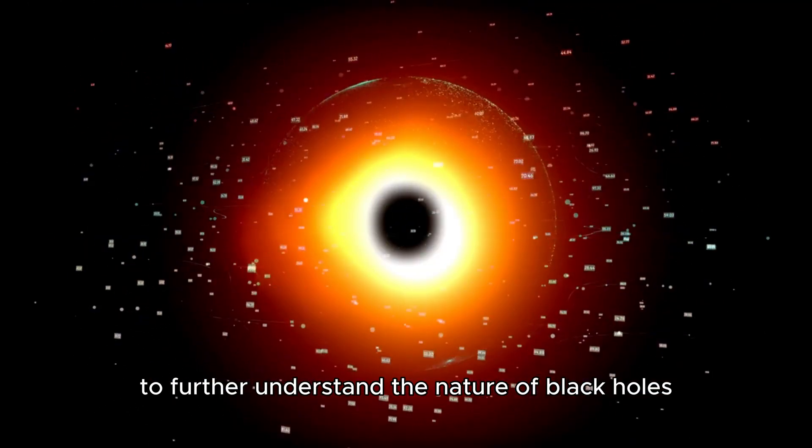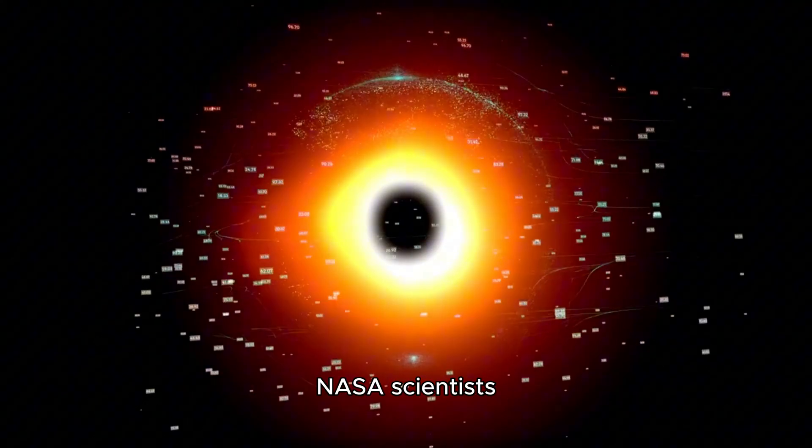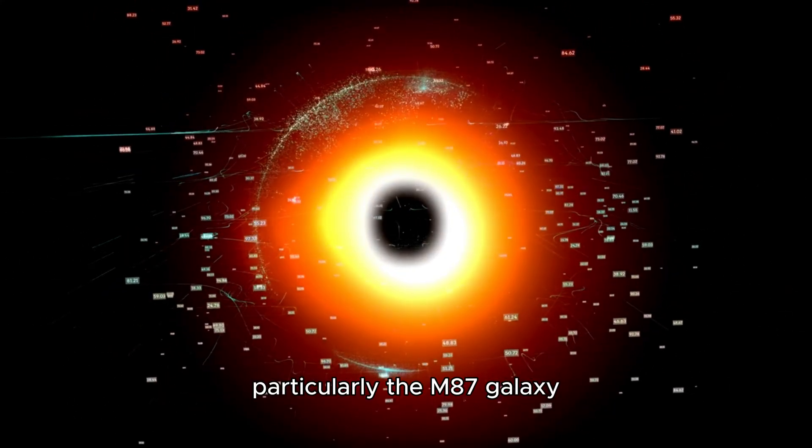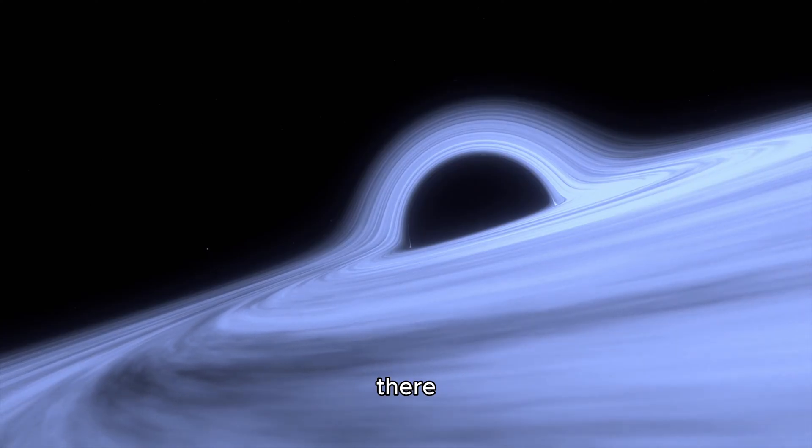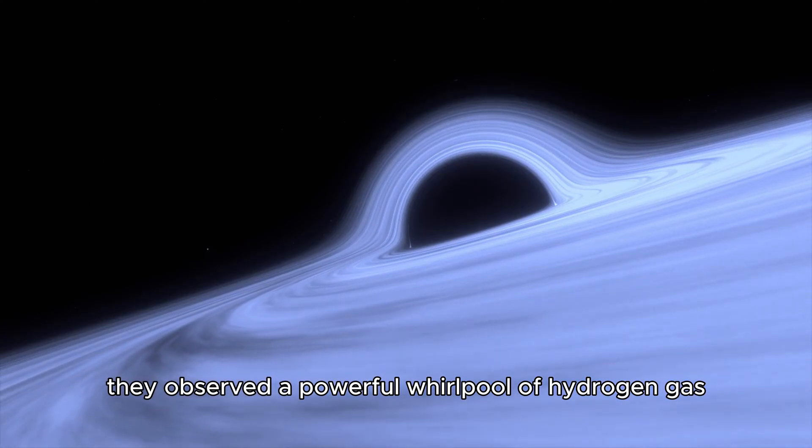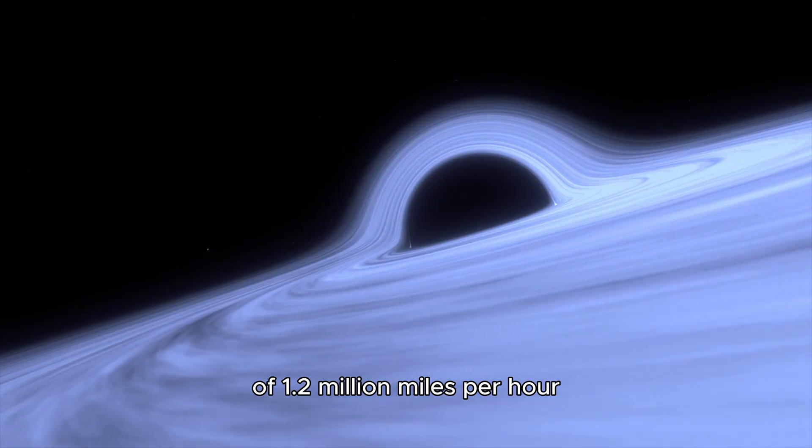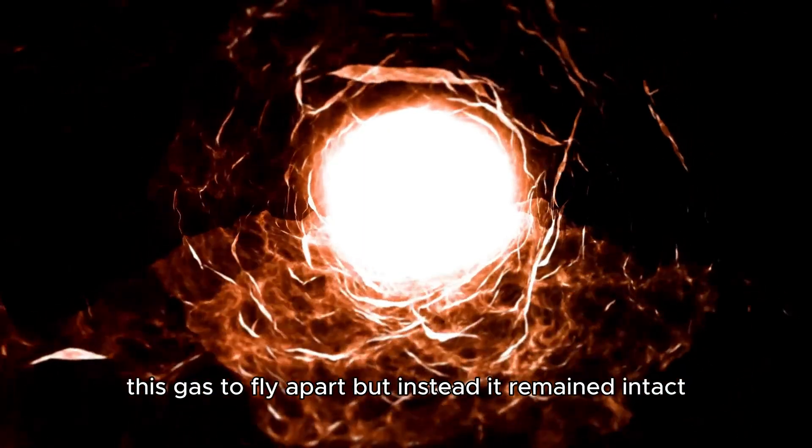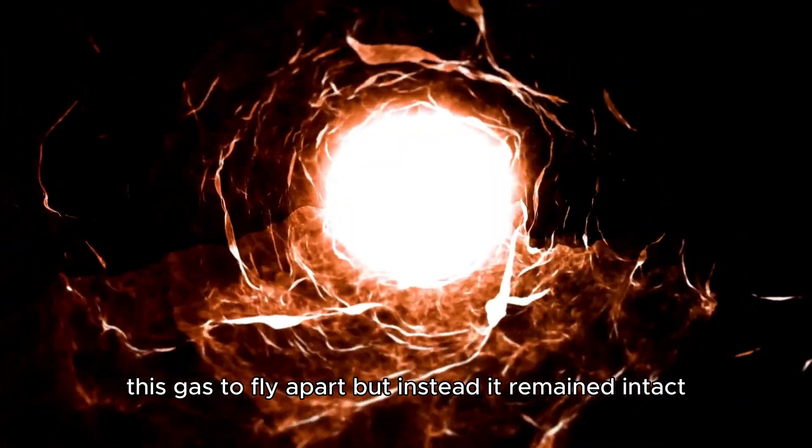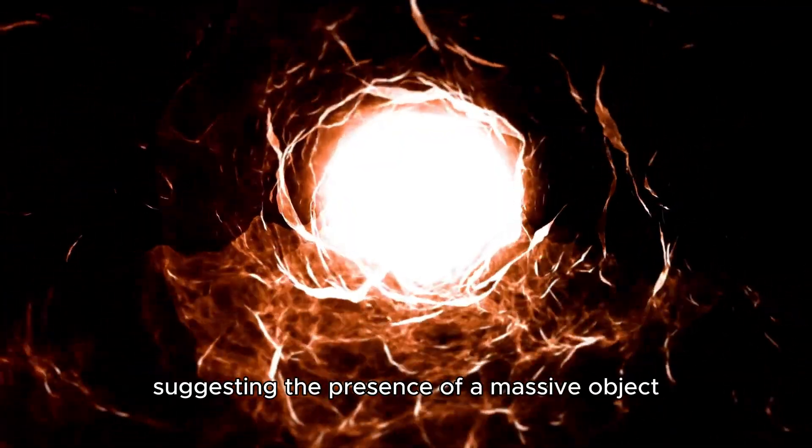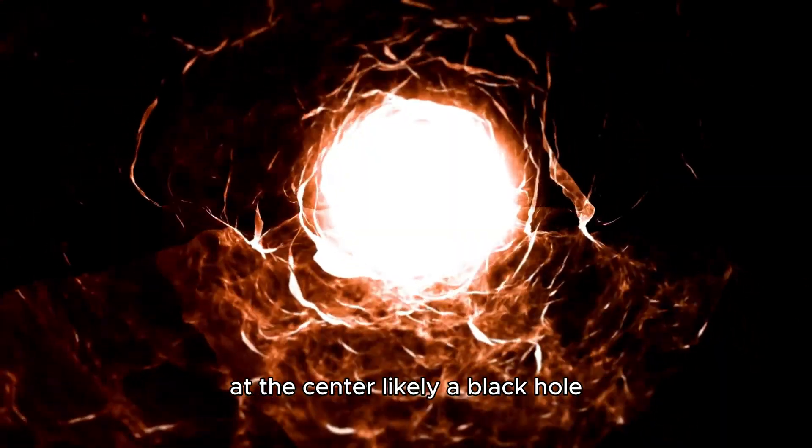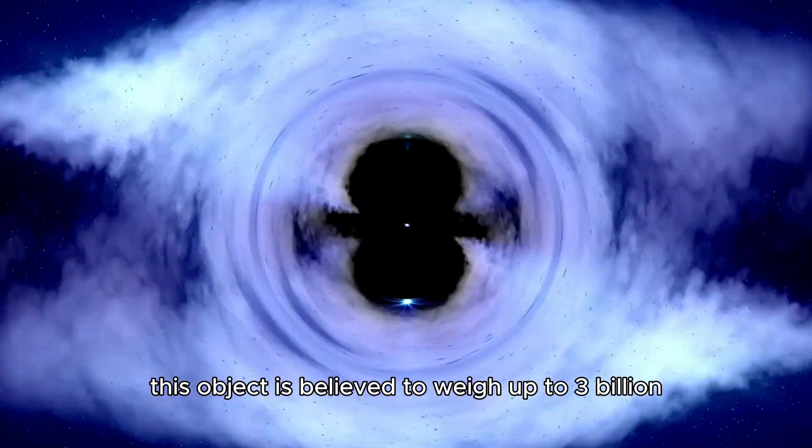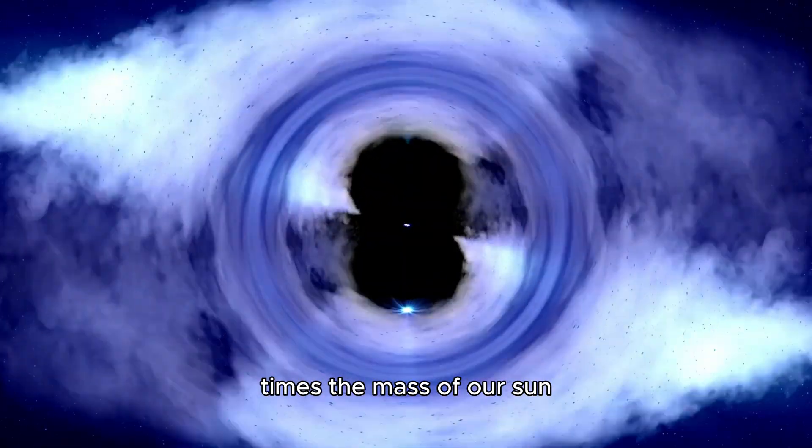To further understand the nature of black holes, NASA scientists turned their attention to the center of the universe, particularly the M87 galaxy. There, they observed a powerful whirlpool of hydrogen gas spinning at mind-boggling speeds of 1.2 million miles per hour. The centrifugal force should have caused this gas to fly apart, but instead it remained intact, suggesting the presence of a massive object at the center, likely a black hole. This object is believed to weigh up to three billion times the mass of our sun.